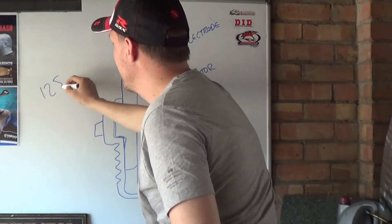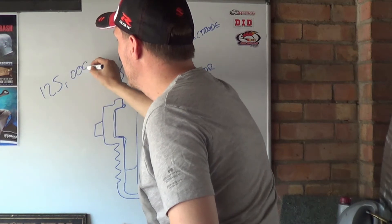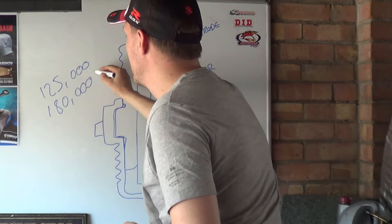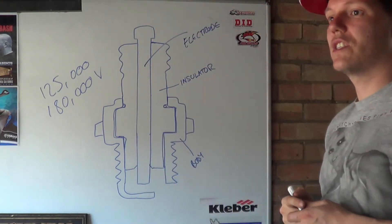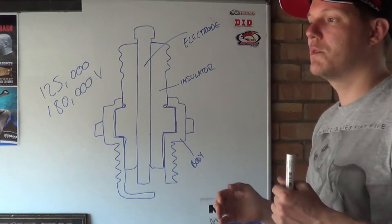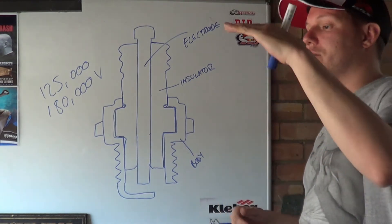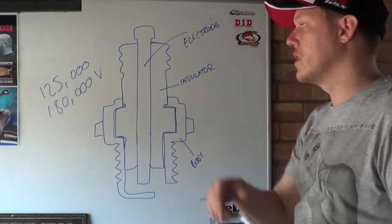it's between 125 and 180, depends on the system, 1000 volts. It is seriously high but the current is minimal. Basically your coil is going to step down, it's kind of like a transformer where it reduces the current and ups the voltage.